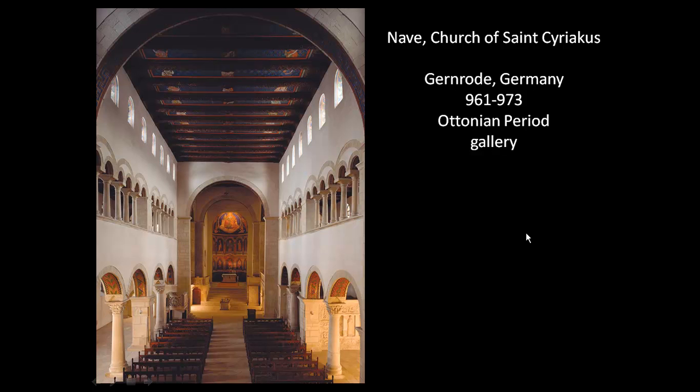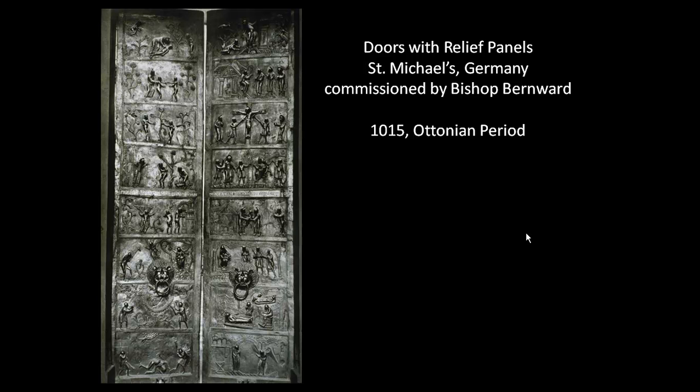These are remarkable bronze doors, 16 feet tall, commissioned by Bishop Bernward — one of the greatest patrons of Ottonian art and architecture — under the reign of Otto III for St. Michael's Church. While visiting Rome, the bishop stopped at the Santa Sabina, an early Christian church renowned for its carved wooden doors with figurative sculptural embellishment very similar to what we see here, though these are bronze. Those wooden doors were the inspiration, and yet again we see the looking back to early Christian artistic forms.